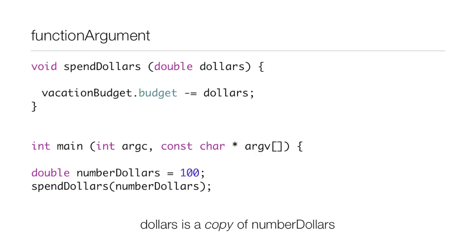down to main. So it runs along with the program. It creates a double, numberDollars = 100. So it creates 100 someplace in the memory of the computer. Then it goes down to spendDollars.